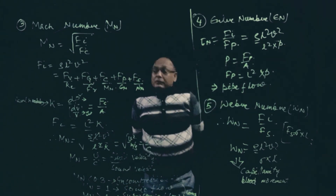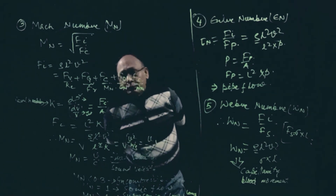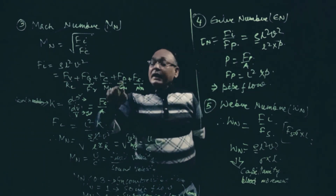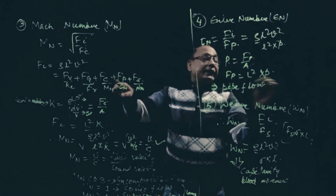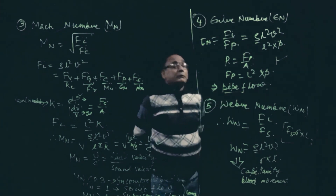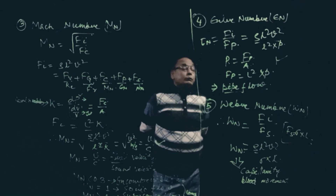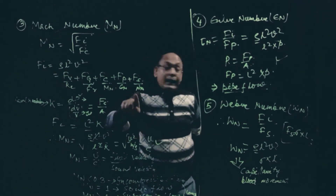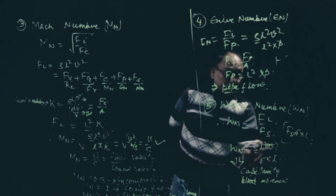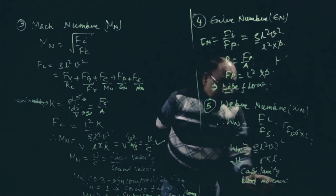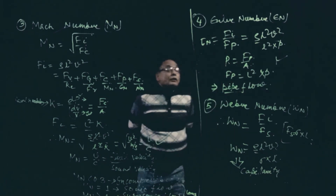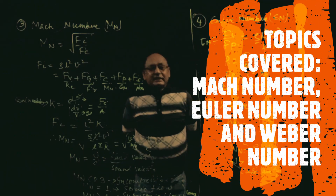The fourth number, Euler number, is Fi by Fp, where Fp is pressure times area. Its application is in pipe flow. The fifth number, Weber number, is Fi by Fs, where Fs is surface tension times length. Its application is in capillary effects. The rest of the discussion will continue in the next class. Thank you.